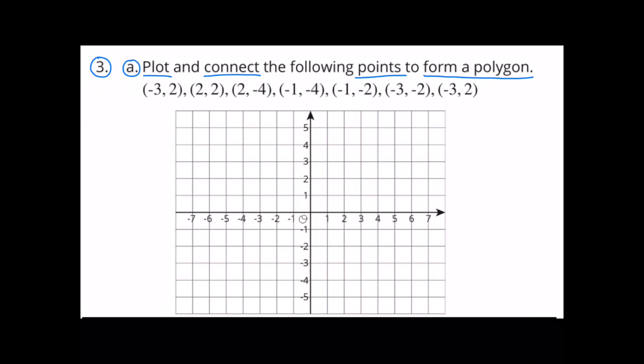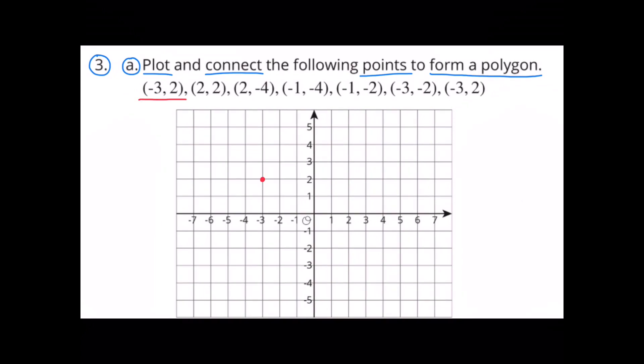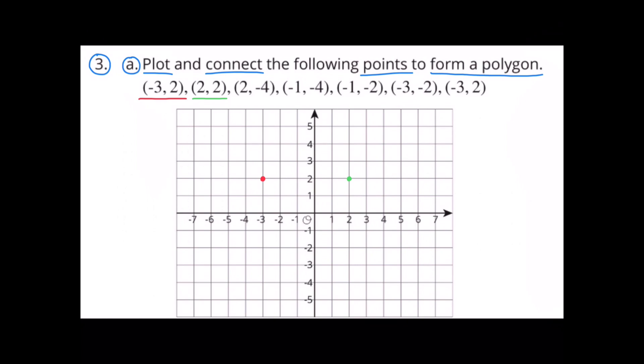Number 3A. Plot and connect the following points to form a polygon. Here you can see I plotted negative 3 and positive 2, by moving 3 places to the left along the x-axis horizontally, and then 2 places vertically along the y-axis. In green, I've plotted the point 2 and 2, moving 2 to the right along the x-axis and 2 vertically along the y-axis.